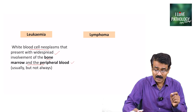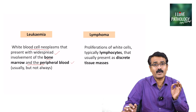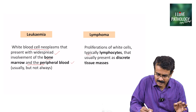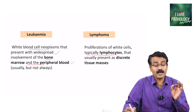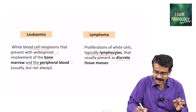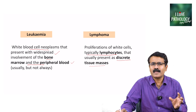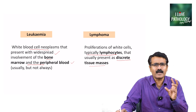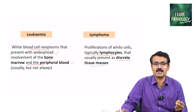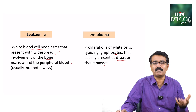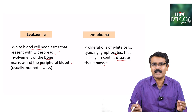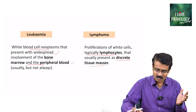What is lymphoma? Lymphomas are the proliferation of white blood cells — typically lymphocytes — that are usually present as discrete tissue masses. They present with lymph node enlargements and can present as discrete tissue masses. That is the basic difference between leukemia and lymphoma.